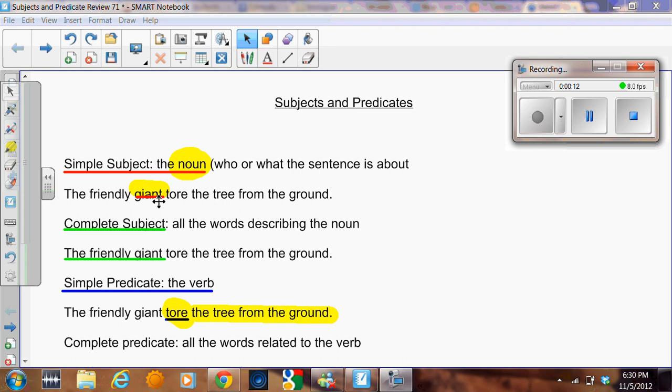In this case, the giant. The complete subject, all the words describing the noun, will give you additional information about the noun. In this case, what kind of giant? The friendly giant, friendly describing the giant. All those together form the complete subject.